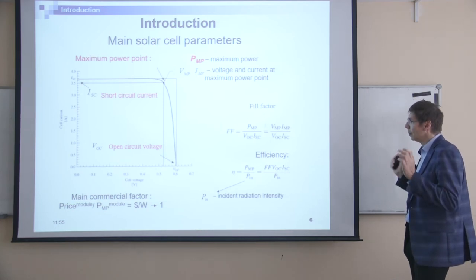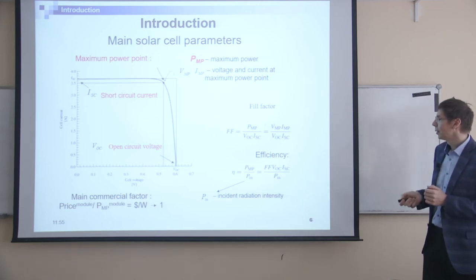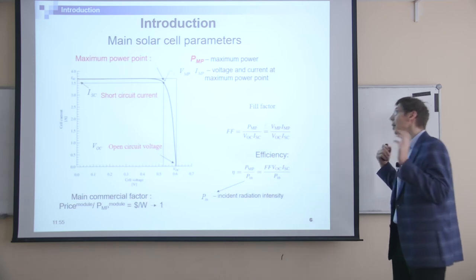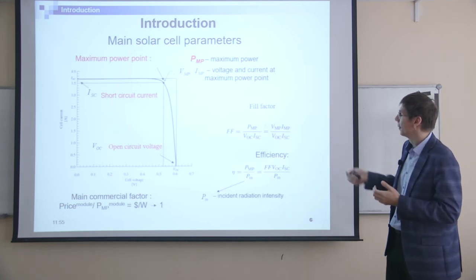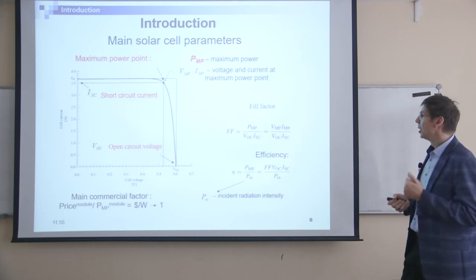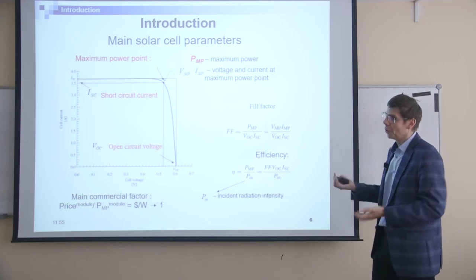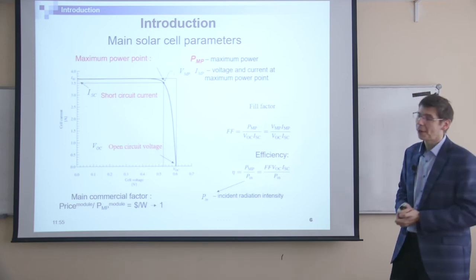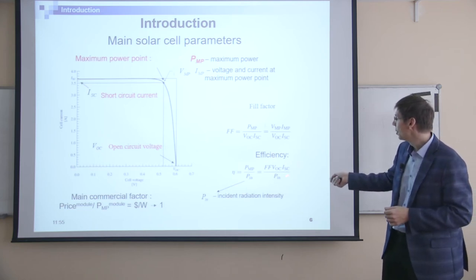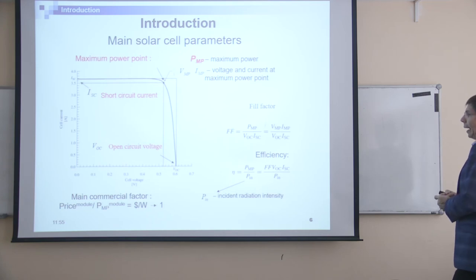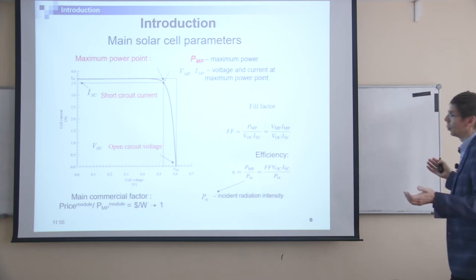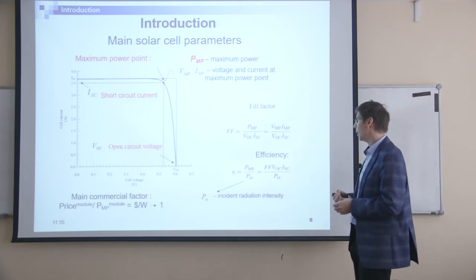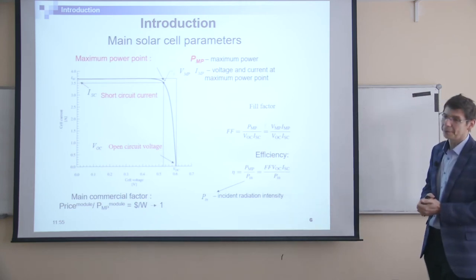Now, if you know the fill factor, you can describe the efficiency in a simple way. You don't need to directly find the maximum power point each time — actually to define fill factor you do need to find it. But then you can just operate with these values: you measure IVQ, get VOC, short circuit current, and fill factor, then simply multiply them and divide by the incident power to get the efficiency value. It could be that easy.